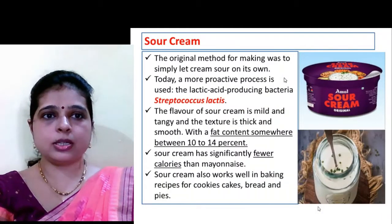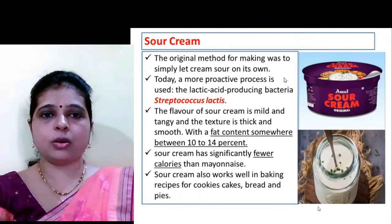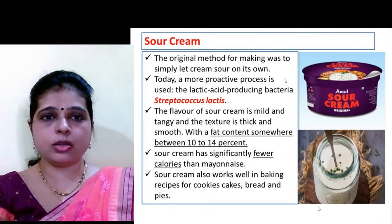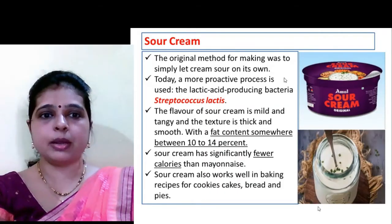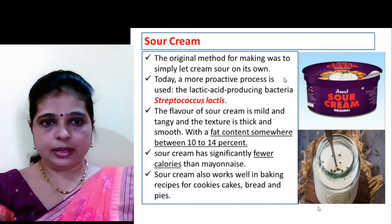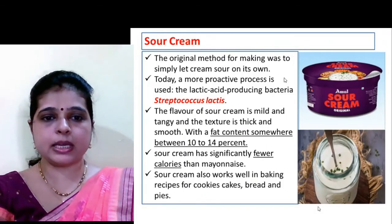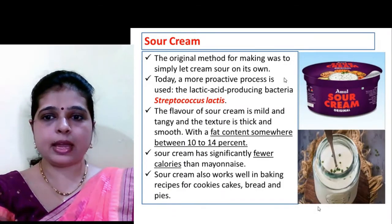The next fermented milk product is sour cream. The original method was to simply let cream sour on its own, but nowadays a more proactive process is used — lactic acid-producing bacteria called Streptococcus lactis. The flavor of sour cream is mild and tangy, the texture is thick and smooth, the fat content is 10 to 14 percent, and it has significantly fewer calories than mayonnaise. Sour cream works well in recipes for cookies, cakes, bread, and pies.